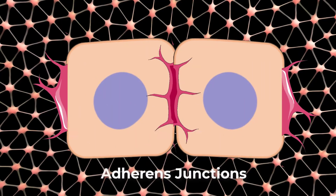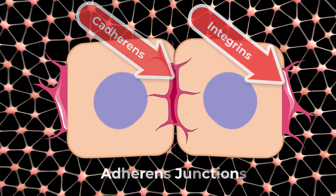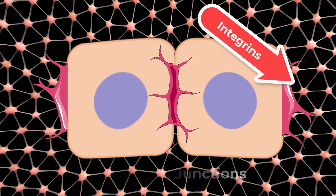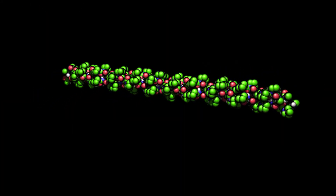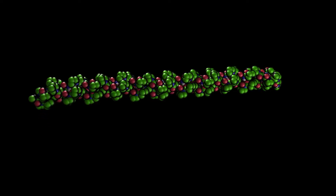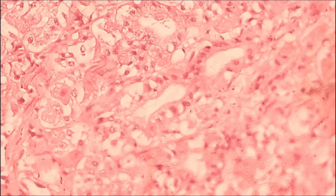Adherens junctions use either cadherins or integrins depending on whether they are linked to other cells or the matrix. The junctions are characterized by the presence of the contractile protein actin located on the cytoplasmic surface of the cell membrane. The actin can connect isolated patches or can form a belt-like structure inside the cell. These junctions influence the shape and folding of the epithelial tissue.